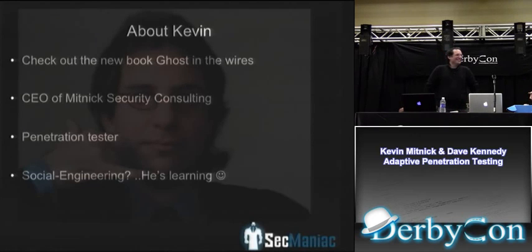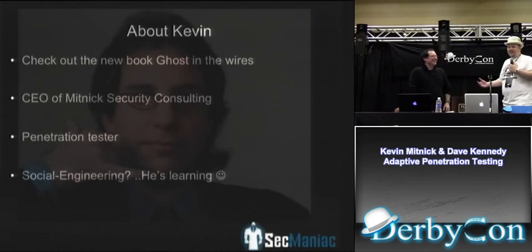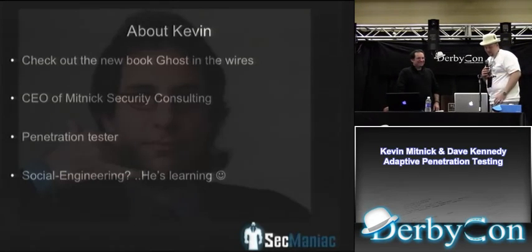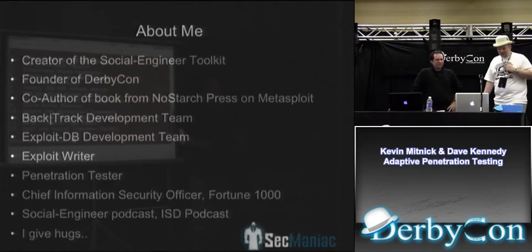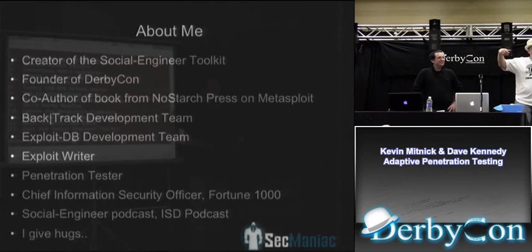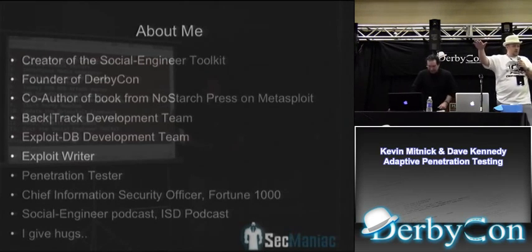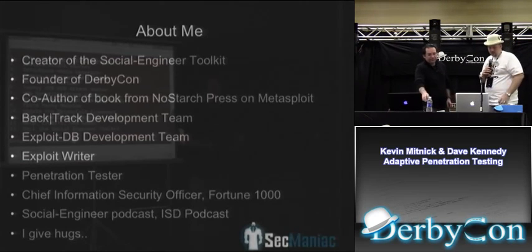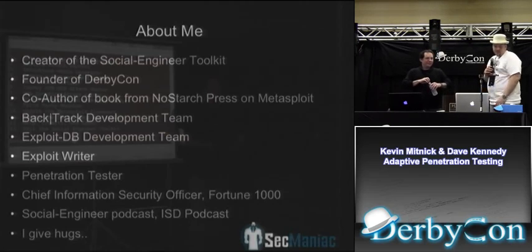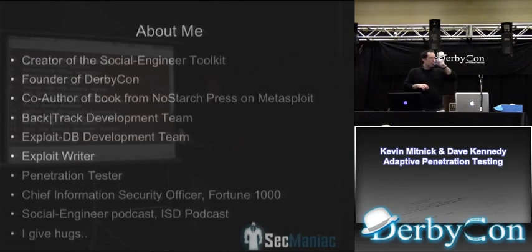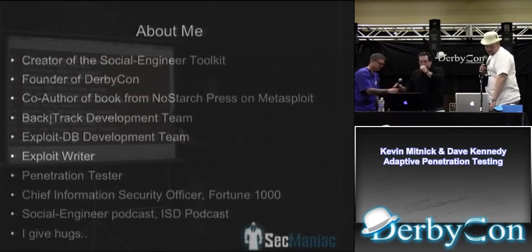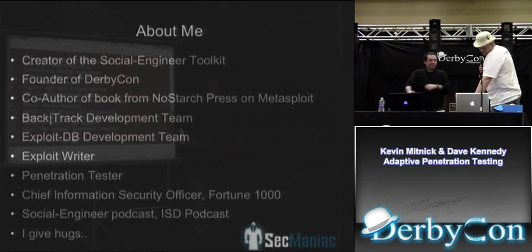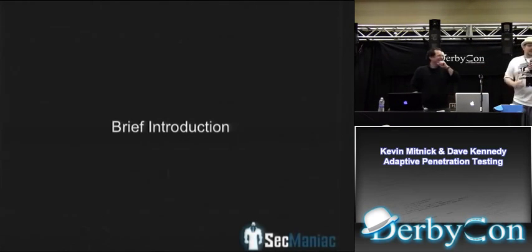I have to say Kevin is the number one bug contributor to the Social Engineer Toolkit - he constantly uses it and I get to fix all the bugs from my horrible coding. About myself: I'm the creator of the Social Engineer Toolkit, one of the founders of DerbyCon. I have a book from No Starch Press - about 15 minutes after the talk I'll do book signings at the No Starch Press booth right outside. I'm on the BackTrack development team, the Exploit DB team, and I'm Chief Information Security Officer at Diebold. And I give hugs.